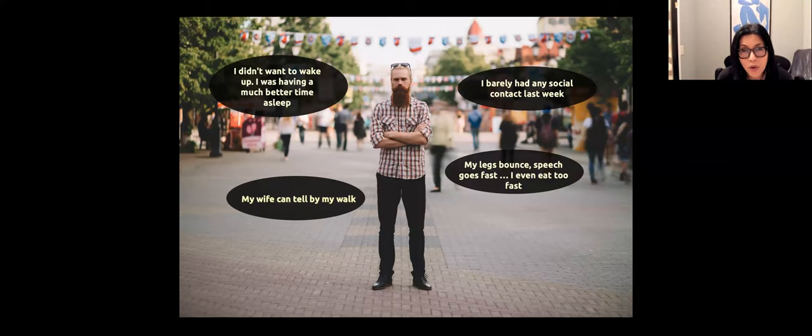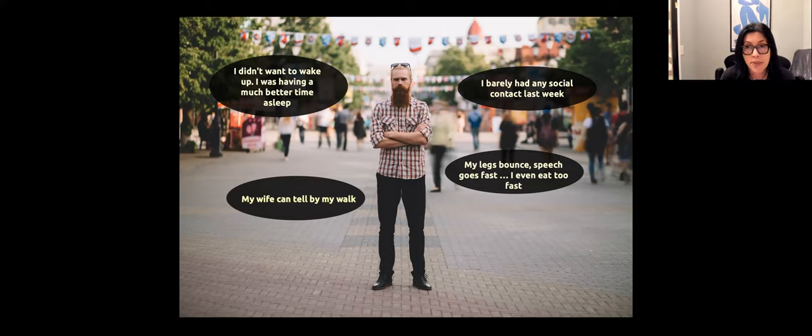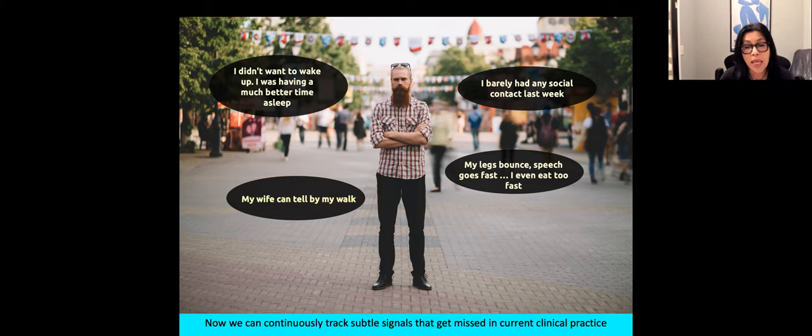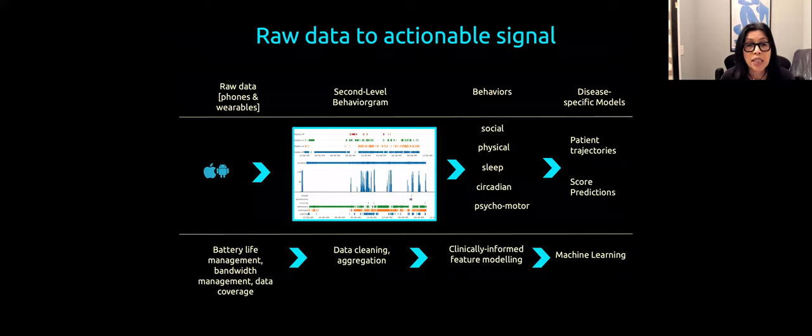But how we live our lives provide a lot of indication of how someone's mental health is progressing. There are, these are quotes from patients or sometimes their loved ones who are talking about what changes to see in someone's behavior. I didn't want to wake up. I was having a bunch of time to sleep, or I had barely any social contacts. My legs bounce, speech goes fast. I even eat too fast. My wife can tell by my walk. These signals, we can start picking up using the devices that we carry. We already know we can get activity data, sleep data.